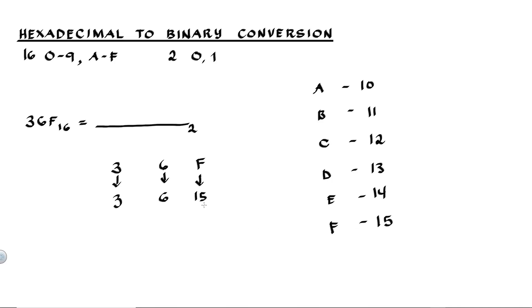The next step is to convert these decimal numbers into binary numbers. We use the place values 1, 2, 4, and 8 — representing 2 raised to 0, 2 raised to 1, 2 raised to 2, and 2 raised to 3 respectively. We set up these columns for each hex digit: 1, 2, 4, 8 for each one.